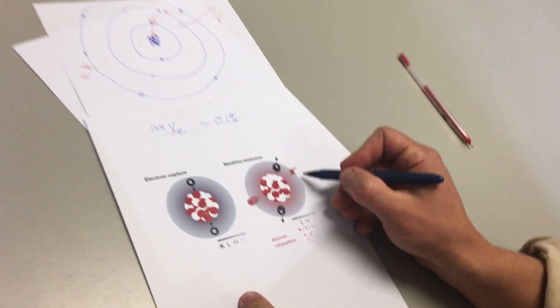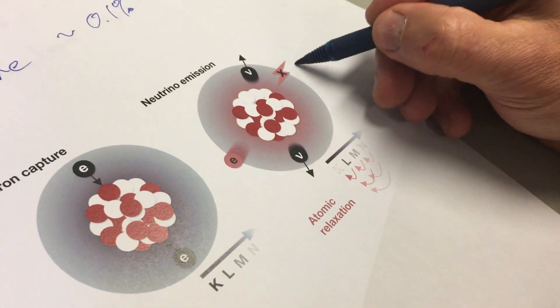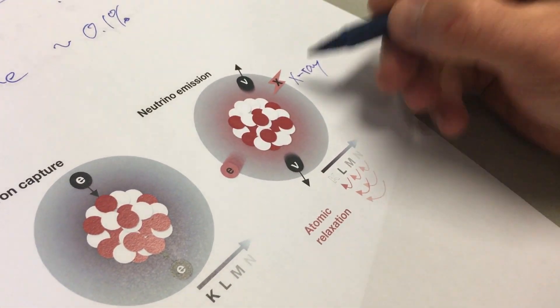The electrons rearrange themselves and they emit a very characteristic x-ray with a total energy of 64 kilo-electron volts.